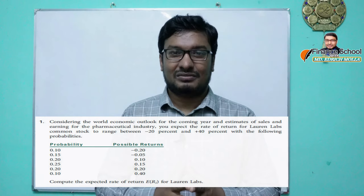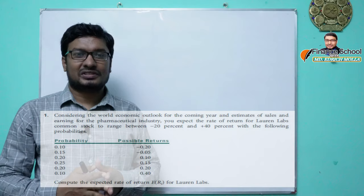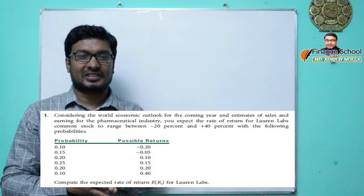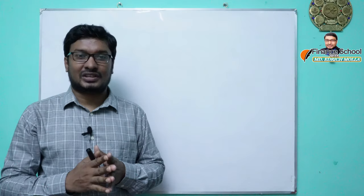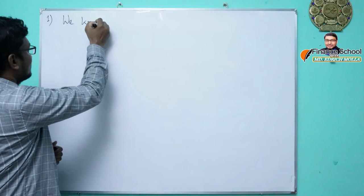He has been eagerly waiting to see this chapter, so that's why we are going to solve it. As you can see in question number one, we will solve this first, and then one after another we will solve all the problems from this chapter. So let's get started right now. If we consider question number one, we find that we have been given returns and probabilities, and the requirement is to find out the expected rate of return.